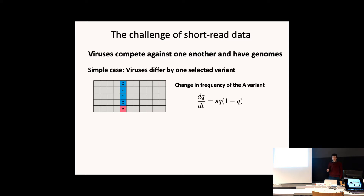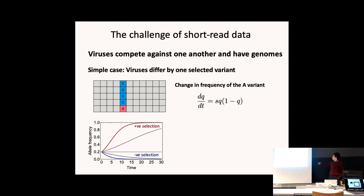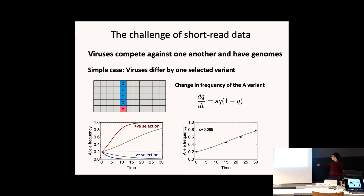The short-read nature of the data creates technical challenges. If two viruses differ by only one variant in the whole genome, we can use population genetics to describe what would happen to the frequency of this variant. Here q is the frequency of the variant and s is the strength of selection. If s is greater than zero — positive selection — the frequency increases over time in a mathematically predictable way. If s is less than zero — negative selection — the variant is expected to die out. So with one variant we can fit a simple model to data over time.